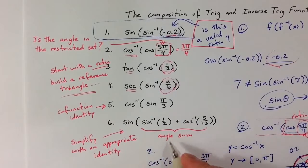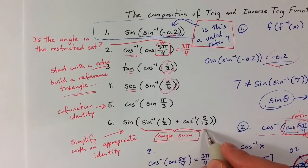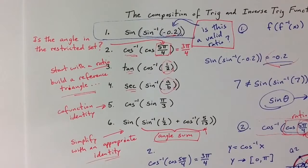And finally, the last expression involved an angle sum inside the sine function. And so using the angle sum identity for sine, we were able to simplify that expression.